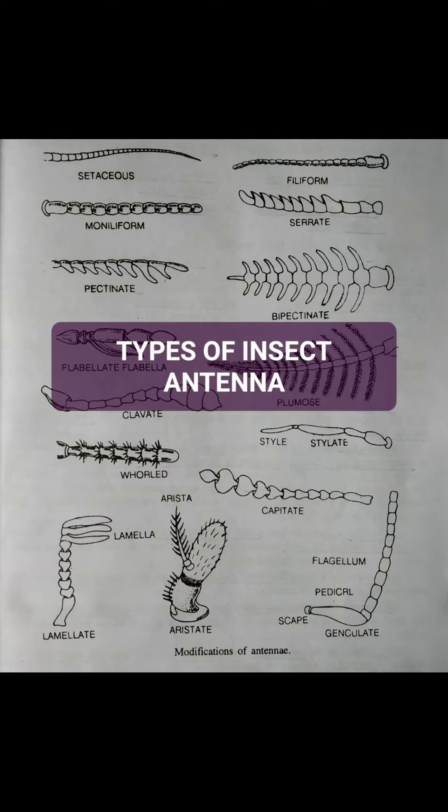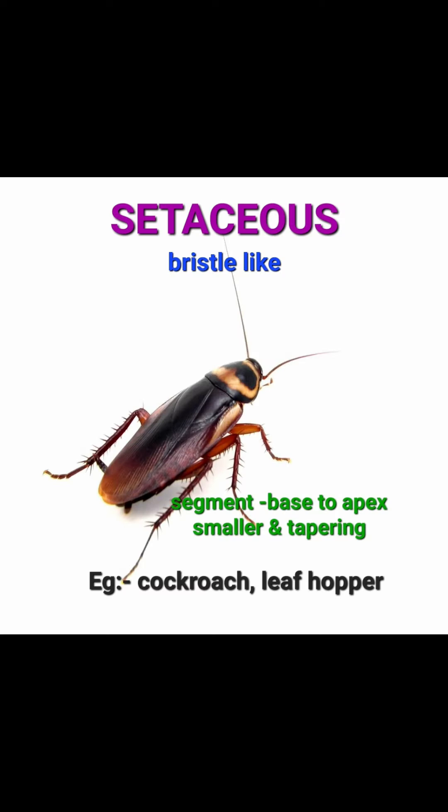Types of antenna. First is setaceous type. It is bristle-like, meaning each segment from base to apex becomes smaller and tapering, like in cockroach and leaf hopper.